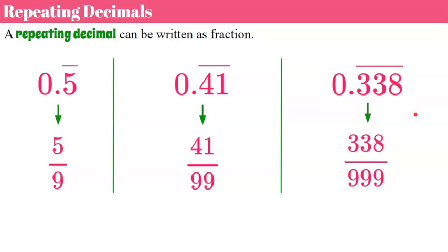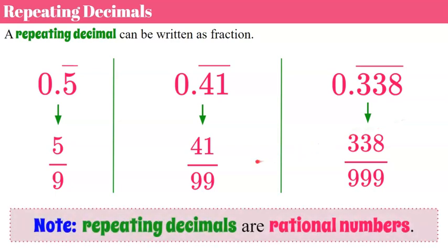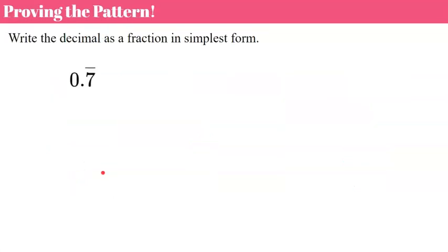Repeating decimals are rational numbers, and here's why. We have that word ratio in rational numbers, and all repeating decimals can be written as a fraction, which is a ratio of a part to a whole — that makes them a rational number. Now let's prove the pattern. We're going to write this decimal as a fraction in simplest form and prove why that pattern works.